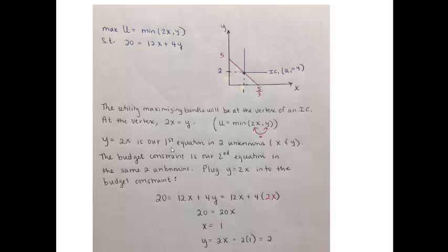From the Lagrangian methods video, remember that we need a second equation with the same two unknowns. And just like in that video, here the second equation is the budget constraint.